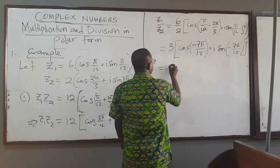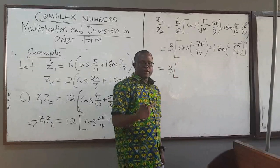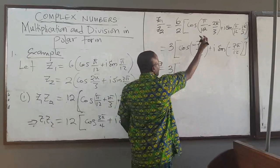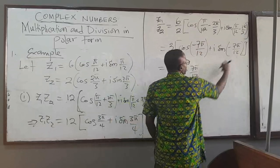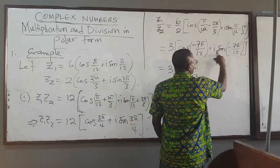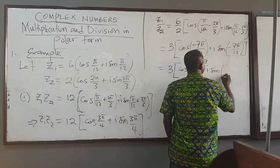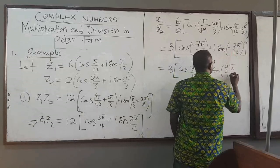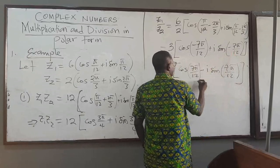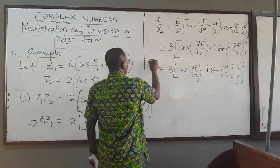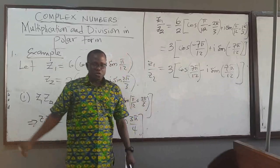You can further simplify this: cosine of negative x equals cosine of x, so the negative just goes away and you have cosine of 7 pi over 12. And for the sine, you bring the negative in front: minus i sine of 7 pi over 12. So z1 over z2 equals 3 times cosine of 7 pi over 12 minus i sine of 7 pi over 12.